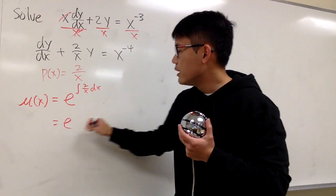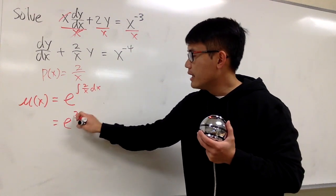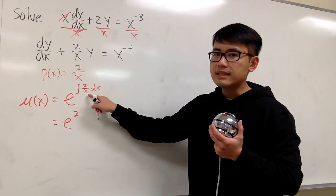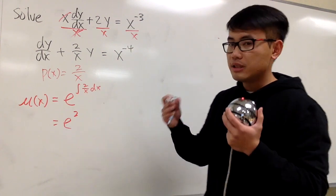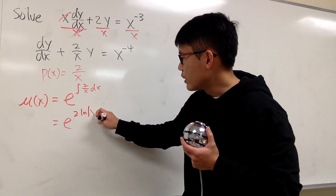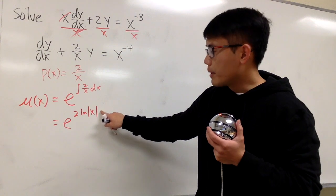Alright, so this is e. Work this out. You have the 2, right? And if you pull out the 2, then you have to integrate 1 over x, and the integral of 1 over x is just ln absolute value of x. Then let me just put that down. ln of absolute value of x.